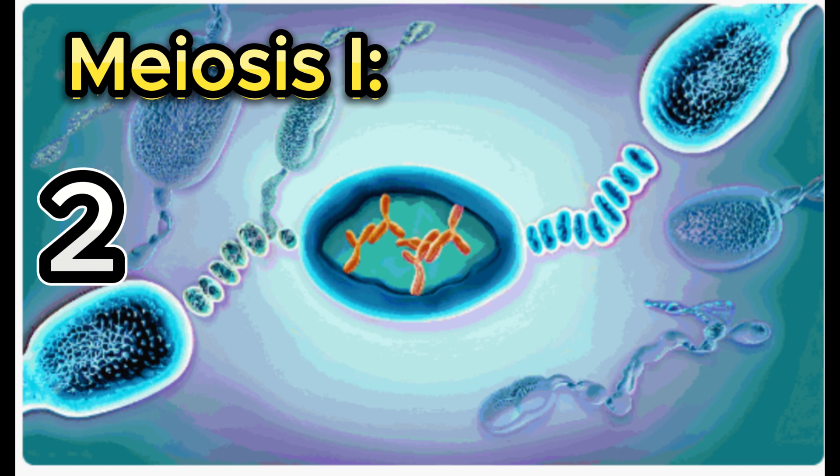Number 2: Prophase I. Chromosomes condense and become visible. Homologous chromosomes pair up in a process called synapsis, which can involve the exchange of DNA segments between non-sister chromatids, crossing over. The nuclear membrane begins to disintegrate.